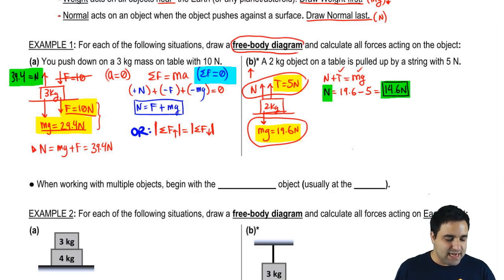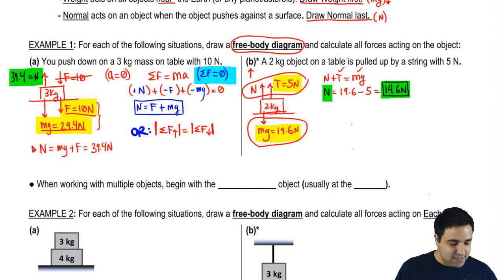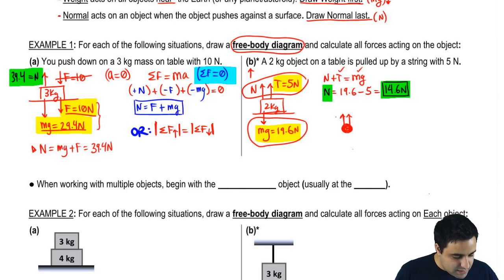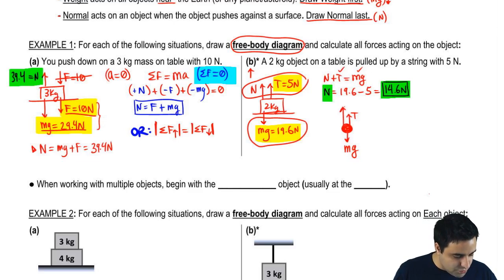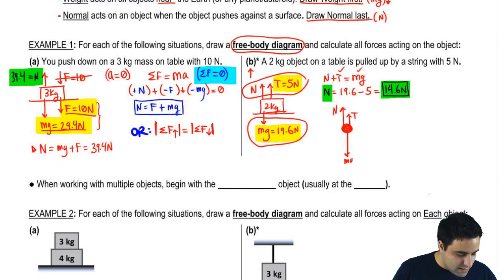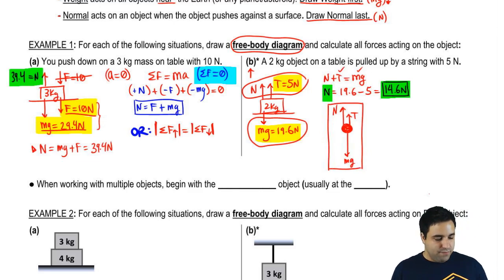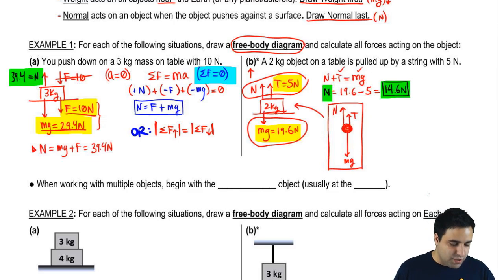I didn't draw the free body diagram exactly how it's supposed to be for either of these problems. A free body diagram isn't supposed to be a box — it's supposed to be a dot. So I've got to put a big dot with arrows coming out of it: this is n, this is t, and this is mg. If you want to be even more correct, draw the normal a little bigger than the tension to indicate it's a stronger force, and mg should be bigger than both of them. That's if your professor is really picky.